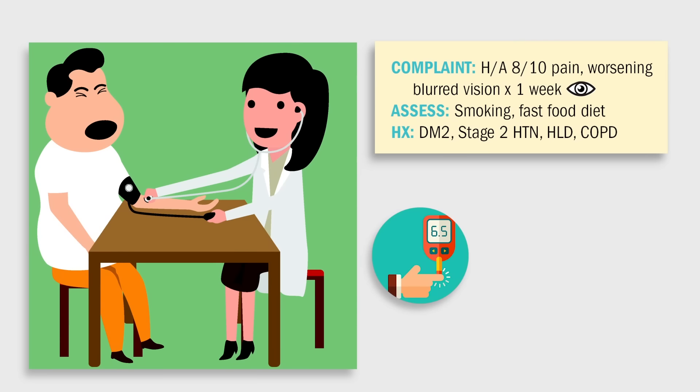His history includes type 2 diabetes times 20 years, stage 2 hypertension, hyperlipidemia, and a recent diagnosis of COPD. Oh snap! What is Don's main priority right now? And what must you, the nurse, prioritize in his plan of care?